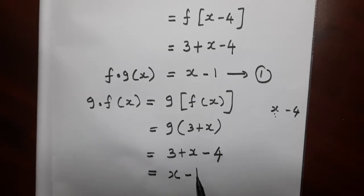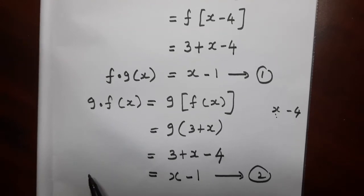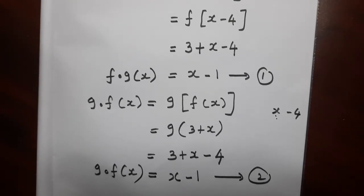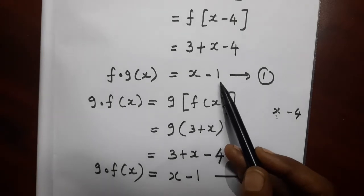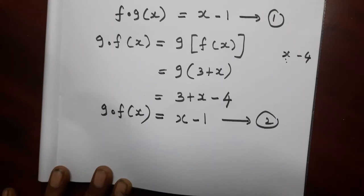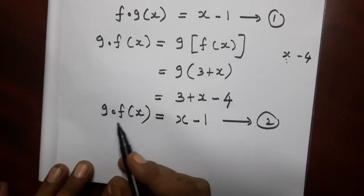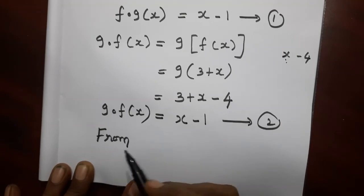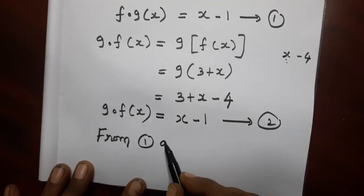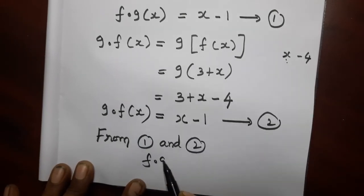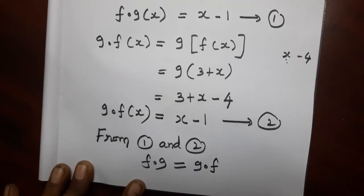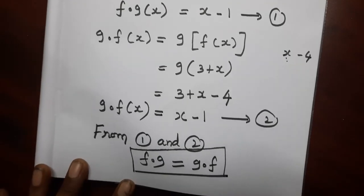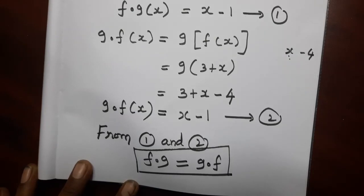This is equation number 2. This is the value of g dot f of x. Now we have to compare this value. x minus 1 and x minus 1, the two answers are equal. So in this particular sum, f dot g equals g dot f. But not every time it will be equal. Sometimes it is equal, sometimes not equal. From 1 and 2, f dot g is equal to g dot f. The first three parts were not equal, but the fourth part, the given functions are equal. So now we finished fourth part. Thank you.